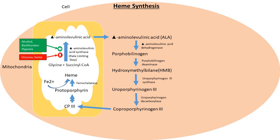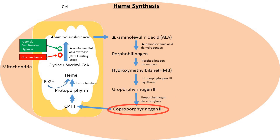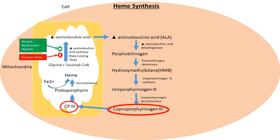HMB is then converted into uroporphyrinogen 3 by the enzyme uroporphyrinogen 3 synthase. Uroporphyrinogen 3 then uses the enzyme uroporphyrinogen decarboxylase to become coproporphyrinogen 3. Coproporphyrinogen 3 (CP3) is then transferred into the mitochondria, shifting the cycle back to where it started.